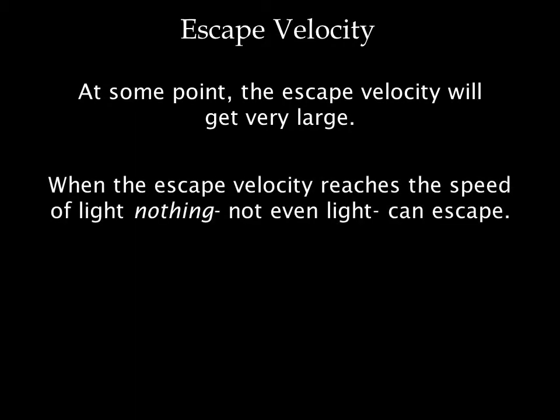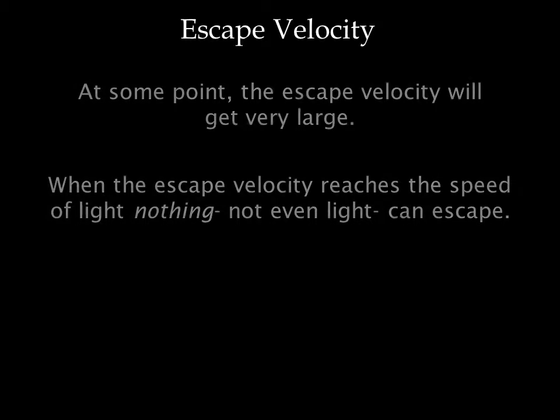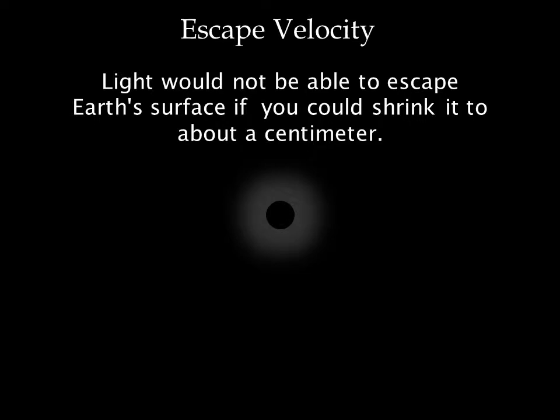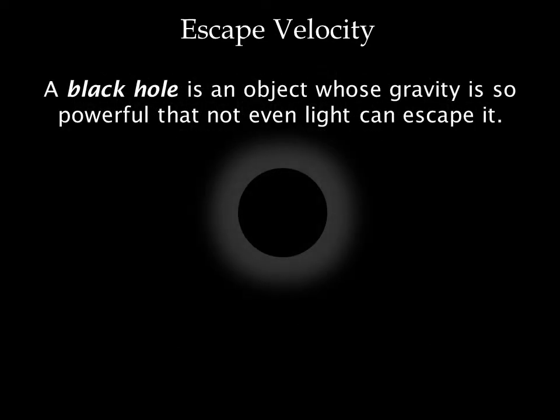If you continue to shrink Earth, at some point the escape velocity will get very large. It will approach the speed of light, and when it does, nothing — not even light — can escape. If you shrink Earth down to about the size of a peanut, light would not be able to escape the surface and Earth would become a black hole. By definition, a black hole is an object whose gravity is so powerful that not even light can escape.